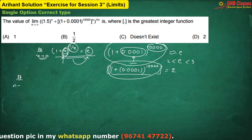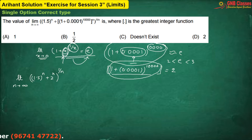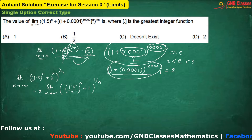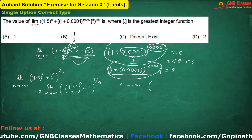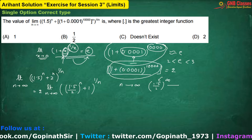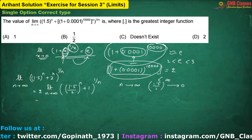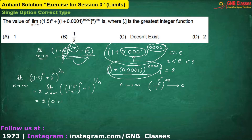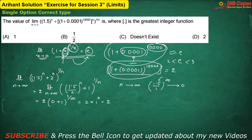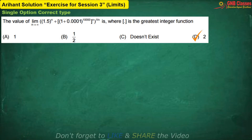Therefore, our limit simplifies with floor giving 2. I am taking 2 to the power n common, so only 2 will come out, and we are left with the remaining expression. As n is approaching towards infinity, 1.5 divided by 2 is basically a fraction, and when the power is tending towards infinity this value will tend towards 0. Therefore we are having 2. This part is 0, and again this part will be 1 by infinity — so it is nothing but 0. So the answer will be 2 in this case. Hence option D is correct.